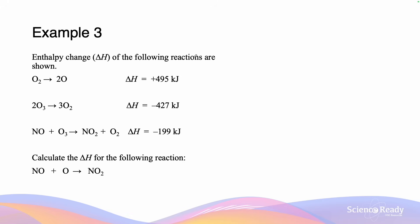The enthalpy change delta H of the following reactions are shown: oxygen breaks down into 2 oxygen atoms; ozone is converted into oxygen; nitrogen monoxide reacts with ozone to form nitrogen dioxide and oxygen. Calculate the delta H for the reaction where nitrogen monoxide reacts with oxygen to form nitrogen dioxide. This example incorporates skills from both previous examples — adding equations and reversing an equation — and we will calculate using Hess's law.